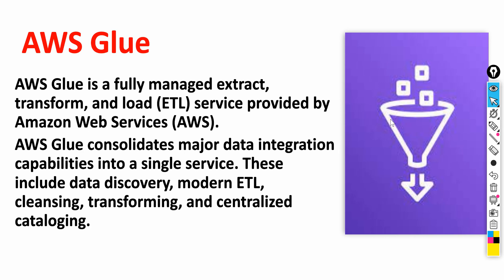So what is AWS Glue? By AWS's own definition, Glue is a managed ETL service that also provides data integration capabilities for data discovery, ETL, cleansing, transforming, and cataloging. At a high level, there are two important aspects of AWS Glue: one is the ETL part and the other is the data catalog part.